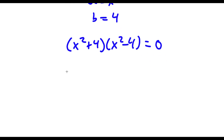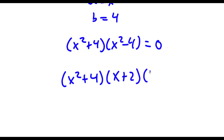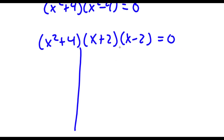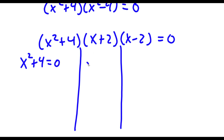Now x squared minus 4 is the same thing as x plus 2 times x minus 2. So now this is going to give me three equations: x squared plus 4 is equal to zero, x plus 2 is equal to zero, and x minus 2 is equal to zero.